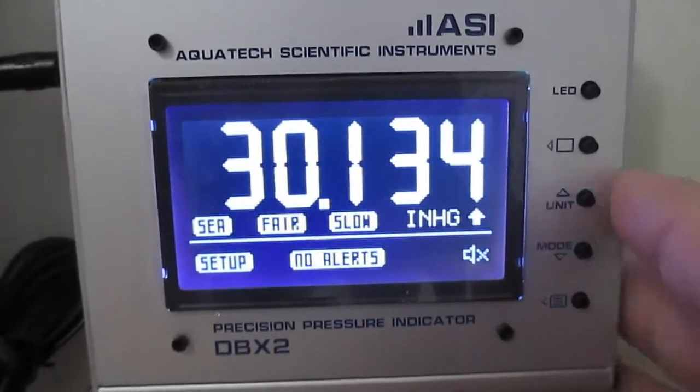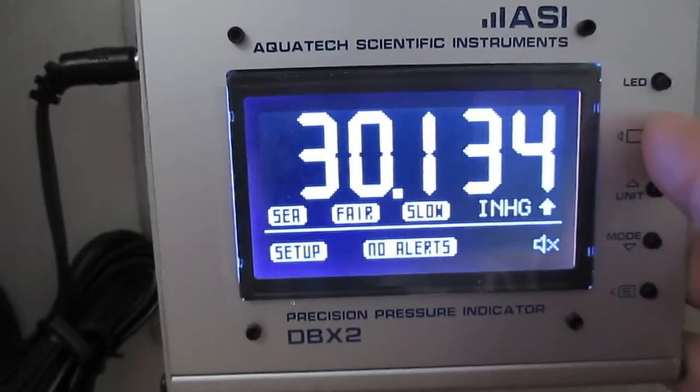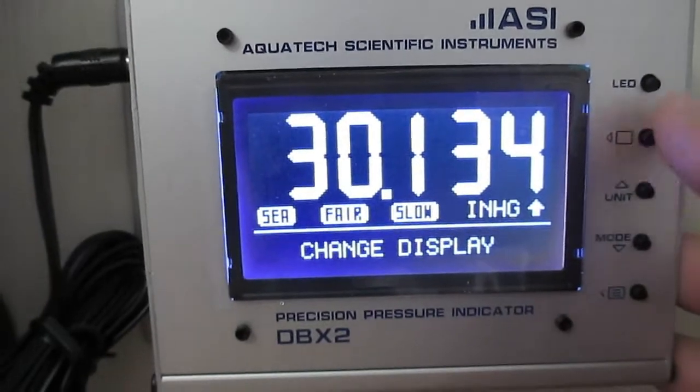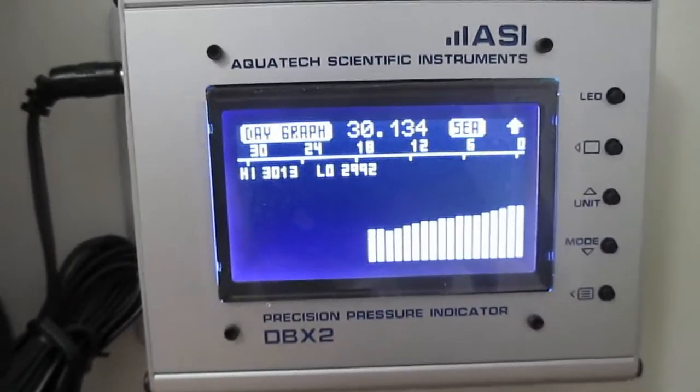The next one, you press this button here, the empty square right there. Hold it until at the bottom it says change display, and then there is your 24-hour mode, your 24-hour bar graph.